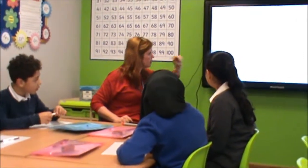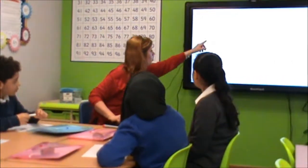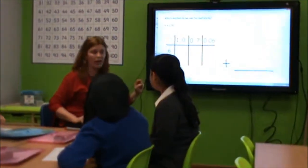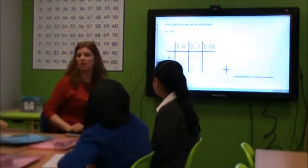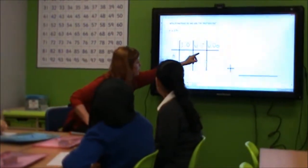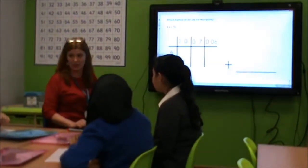So the first thing we're going to do is partition the number. So we've got 1.0, which is like 1 pound. 0.7, which is actually like 70p. 0.06, which is like 6p.